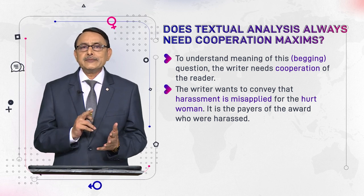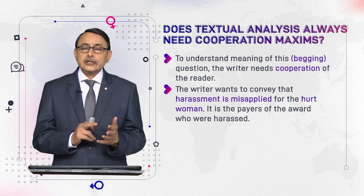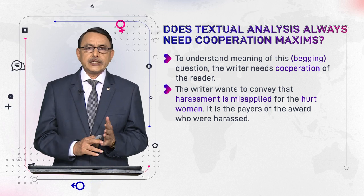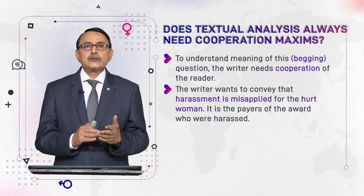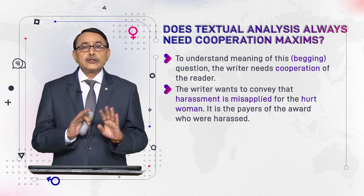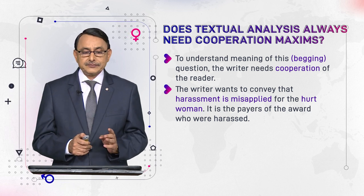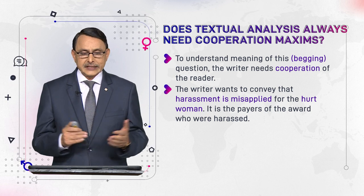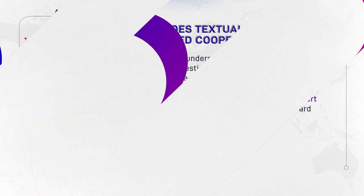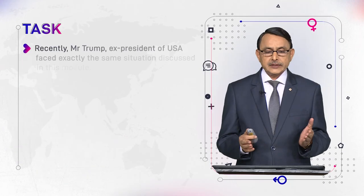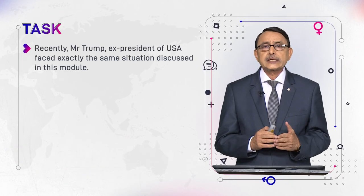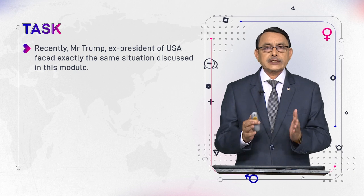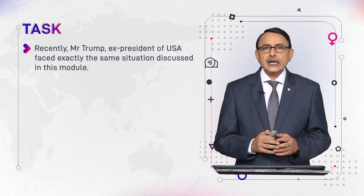This is how the begging fallacy is pointed out by the maxim of quantity. In texts like this, we do need maxims of cooperation to dig out the meaning. Otherwise, words can also convey the meaning of the text on their own. So it is not that we need maxims of cooperation all the time.